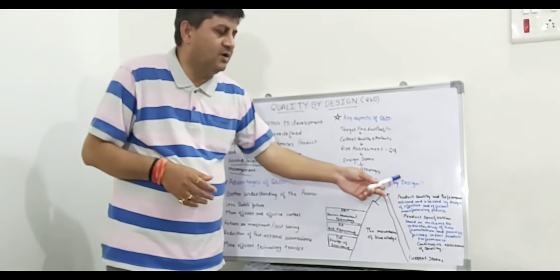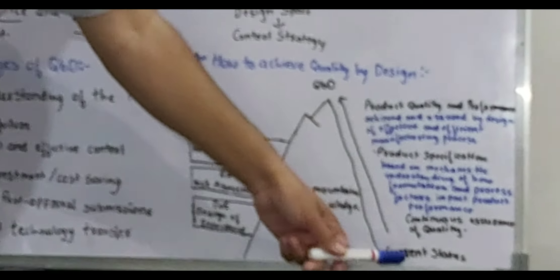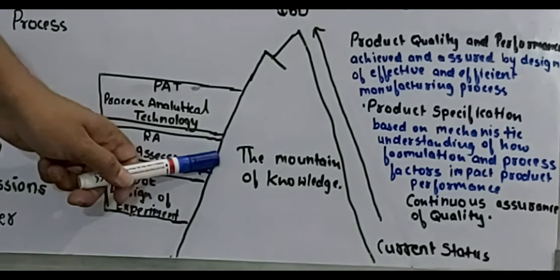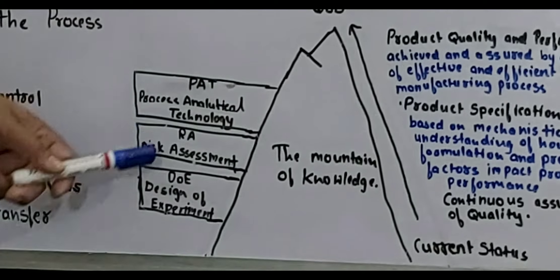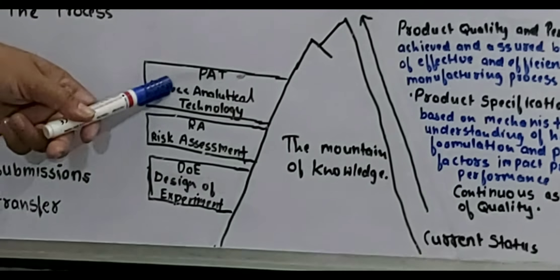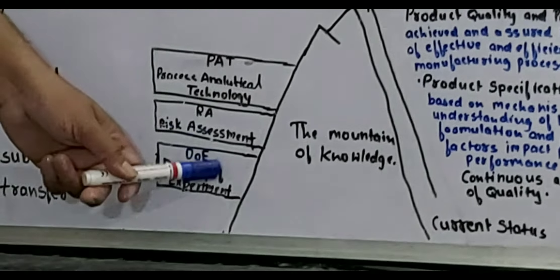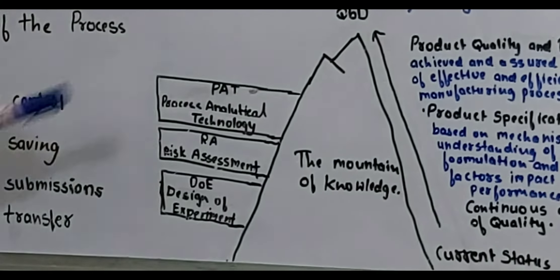Now we will see how to achieve Quality by Design. By applying QBD we can reach the mountain of knowledge, which requires different things: PAT (Process Analytical Technology), Risk Assessment (RA), and DOE (Design of Experiment). We have to design the experiment to understand these elements.